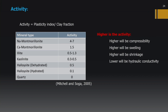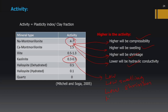Activity of a soil is defined as the ratio of plasticity index to clay fraction. Higher activity means higher compressibility, higher swelling, higher shrinkage, and lower hydraulic conductivity. Sodium montmorillonite has the highest activity — it is highly compressible, highly swelling, and has low hydraulic conductivity. Kaolinite has the lowest activity, with low compressibility, low swelling, and higher hydraulic conductivity.